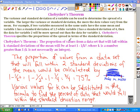For example, if two variables measured in the same units have the same mean, and variable 1 has a standard deviation of 1.5, while variable 2 has a standard deviation of 4, then the data for variable 2 will be more spread out than the data for variable 1.